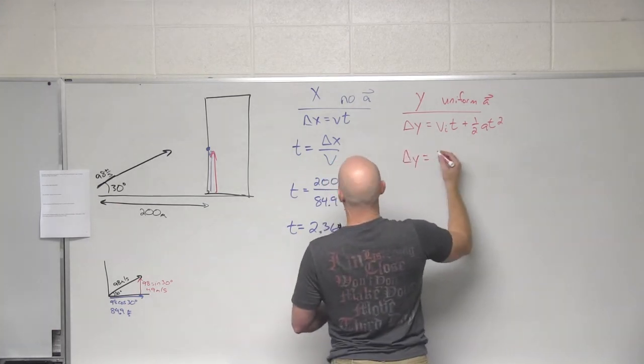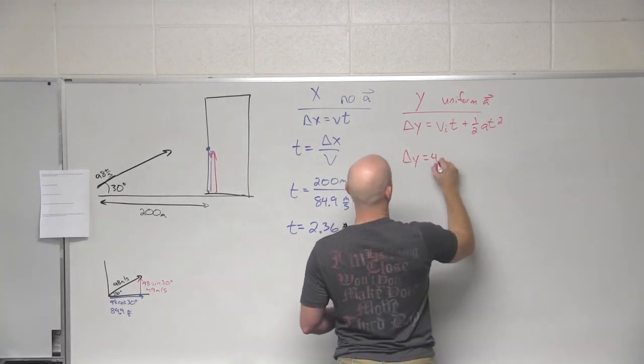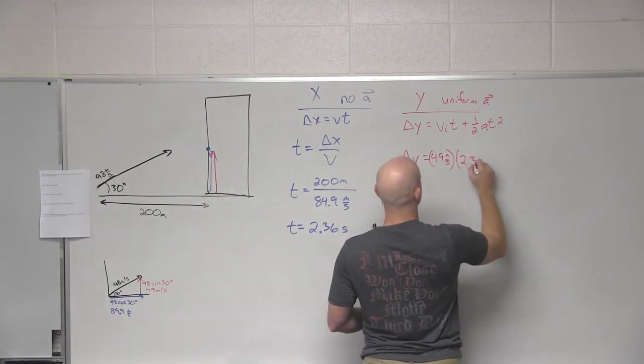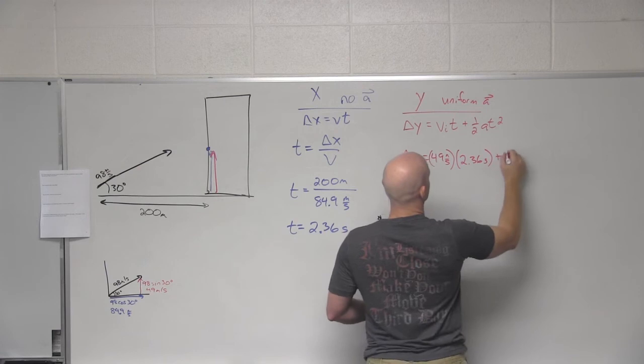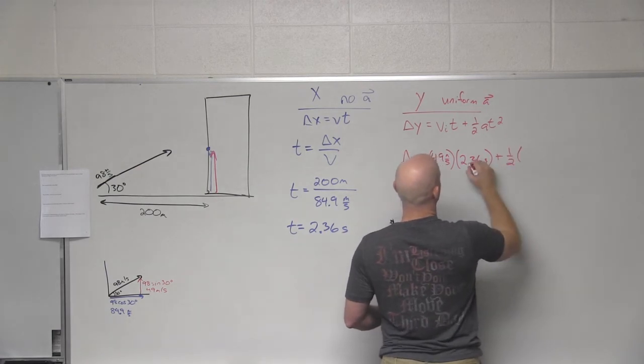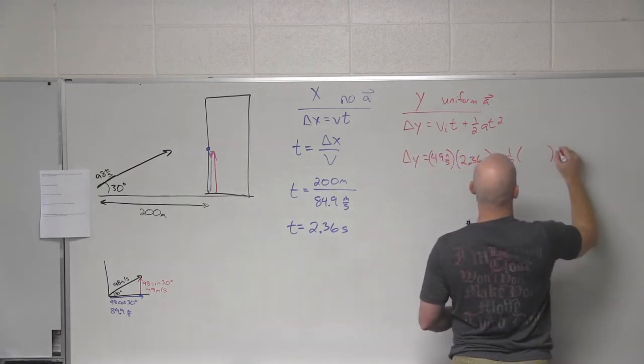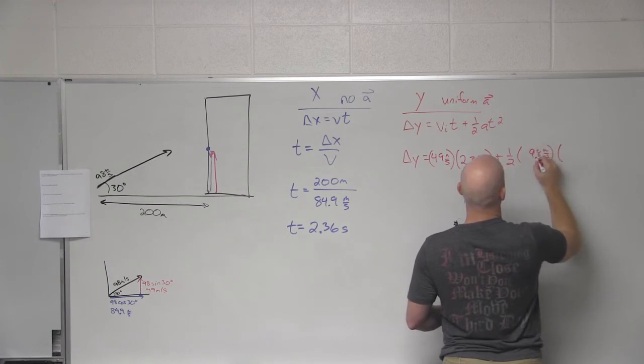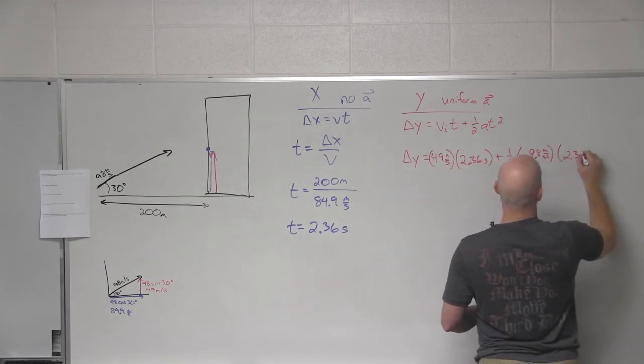So in this case, delta y. What's our initial velocity again? 49 meters per second. Time, 2.36 seconds plus one half. What's my acceleration? And time of 2.36 seconds. Now we've got a problem if this is all I do.